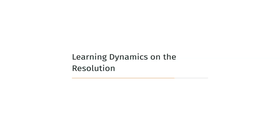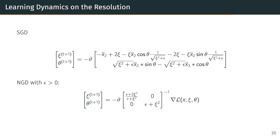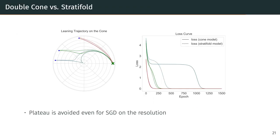The final part looks at learning dynamics of the optimal resolution. We again start by re-parameterizing the parameter surface onto a polar coordinate system, from there we get the log likelihood, stochastic gradient descent, and natural gradient descent. We recollect the two main problems from our initial experiments: stochastic gradient descent experiences attractor behavior near the singularity and natural gradient descent degenerates at the singularity. Comparing stochastic gradient descent on the double cone given by solid lines and on the resolution of the stratifold given by dotted lines, we see that the attractor behavior and resulting loss plateau is mostly avoided when we perform the update on the resolution.